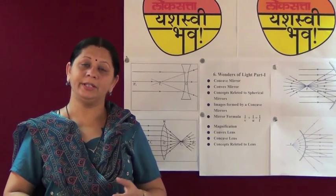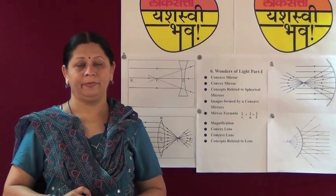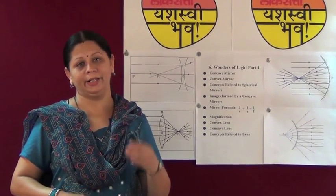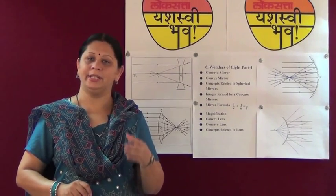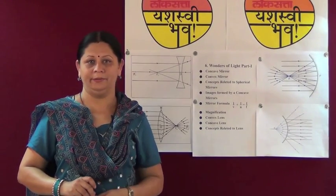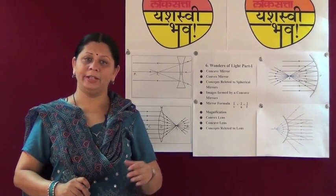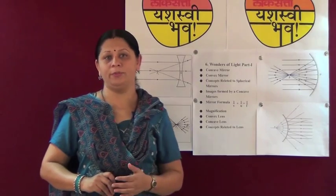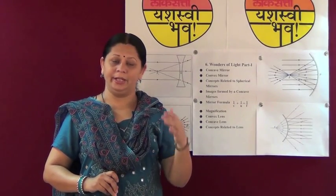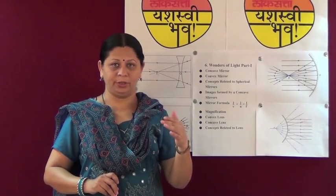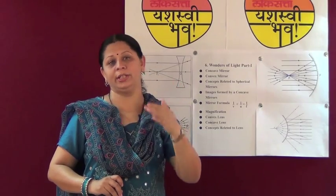Now let us see what is light. Light is a form of electromagnetic radiation that gives us sensation of vision. When light falls on any object, rays enter from the object to our eyes and we are able to see things.